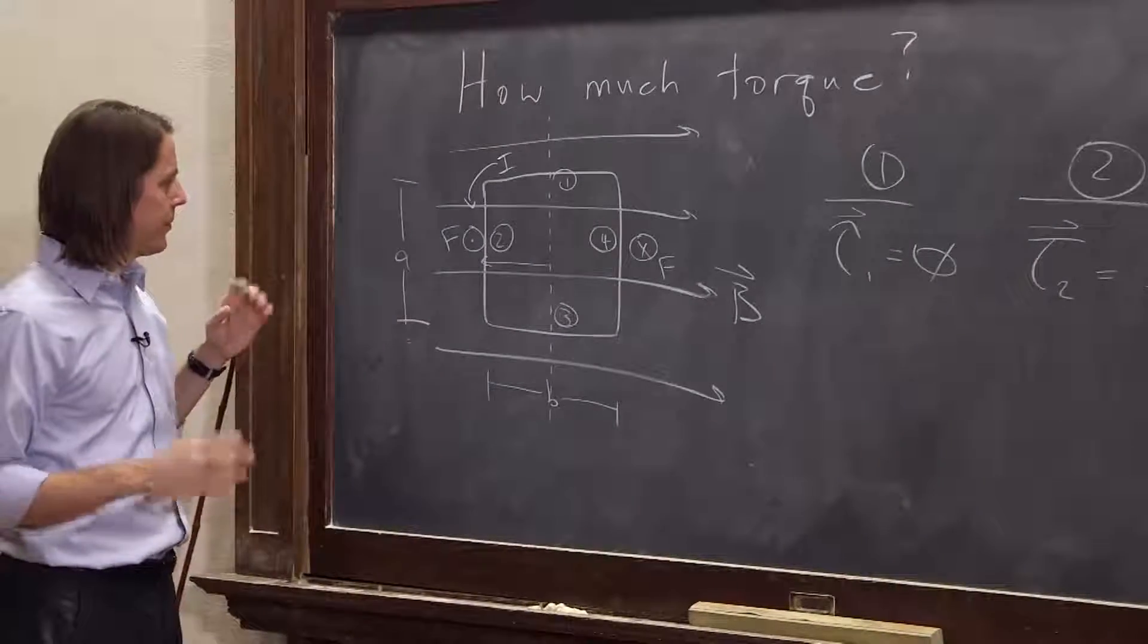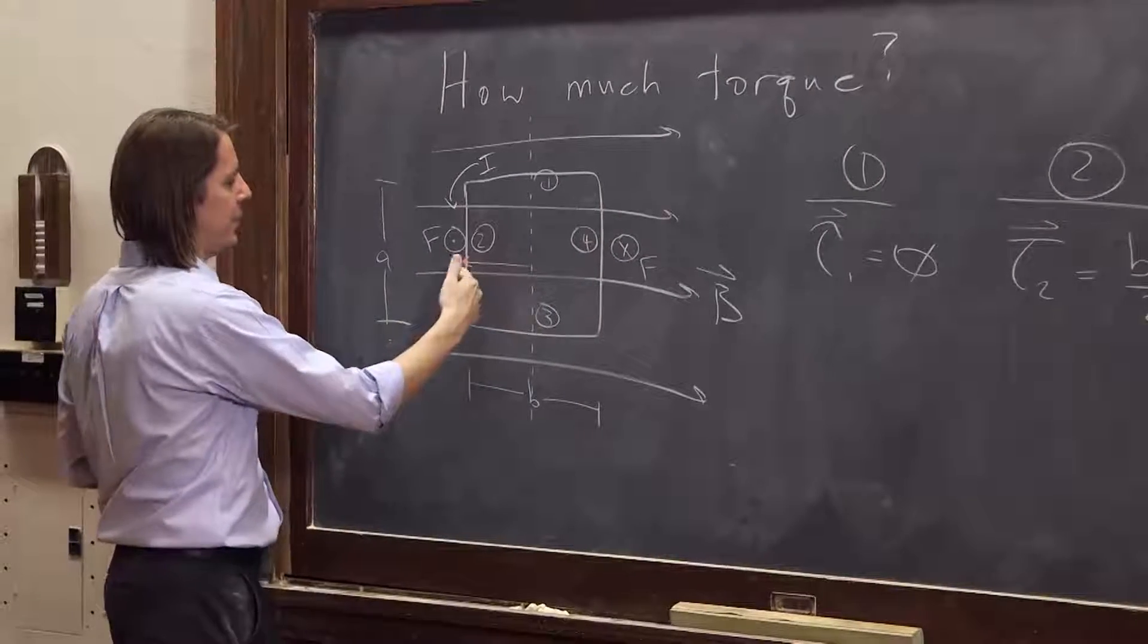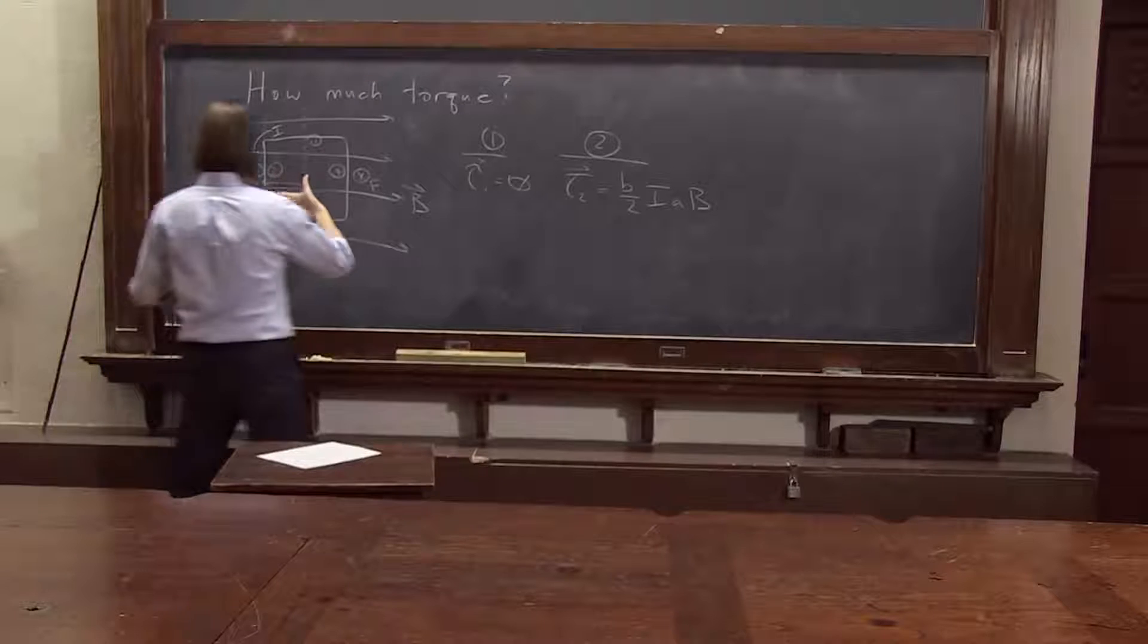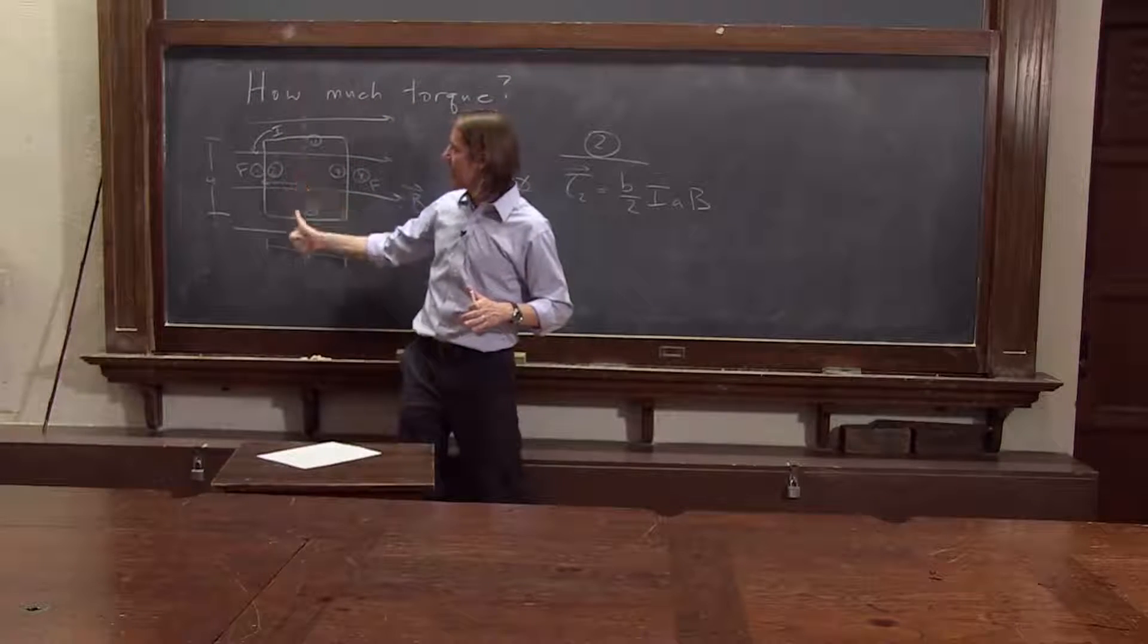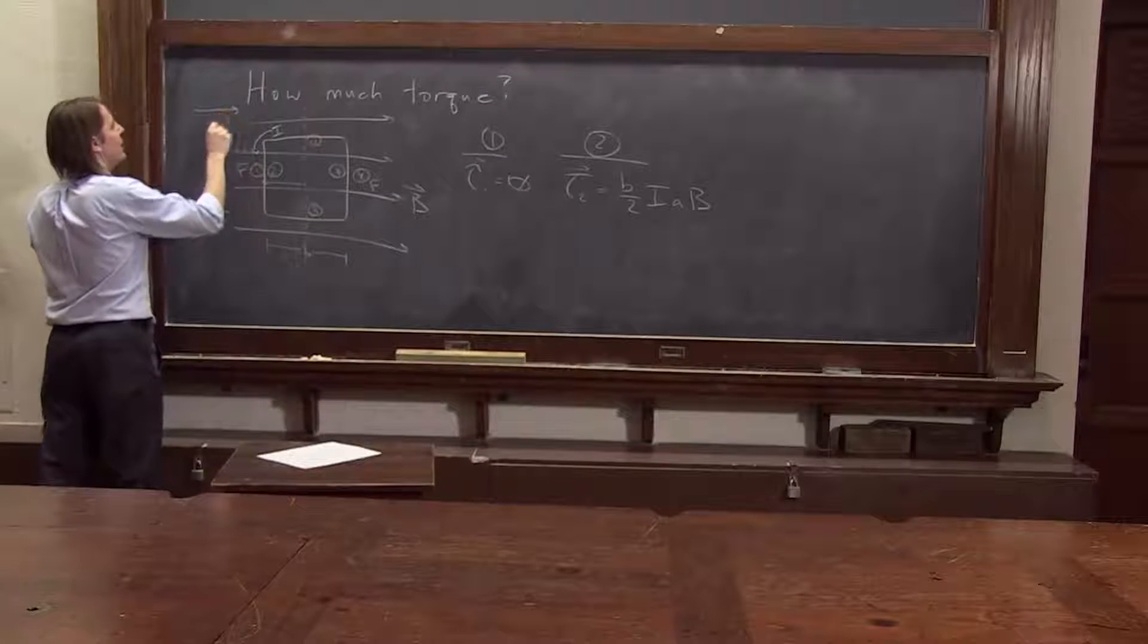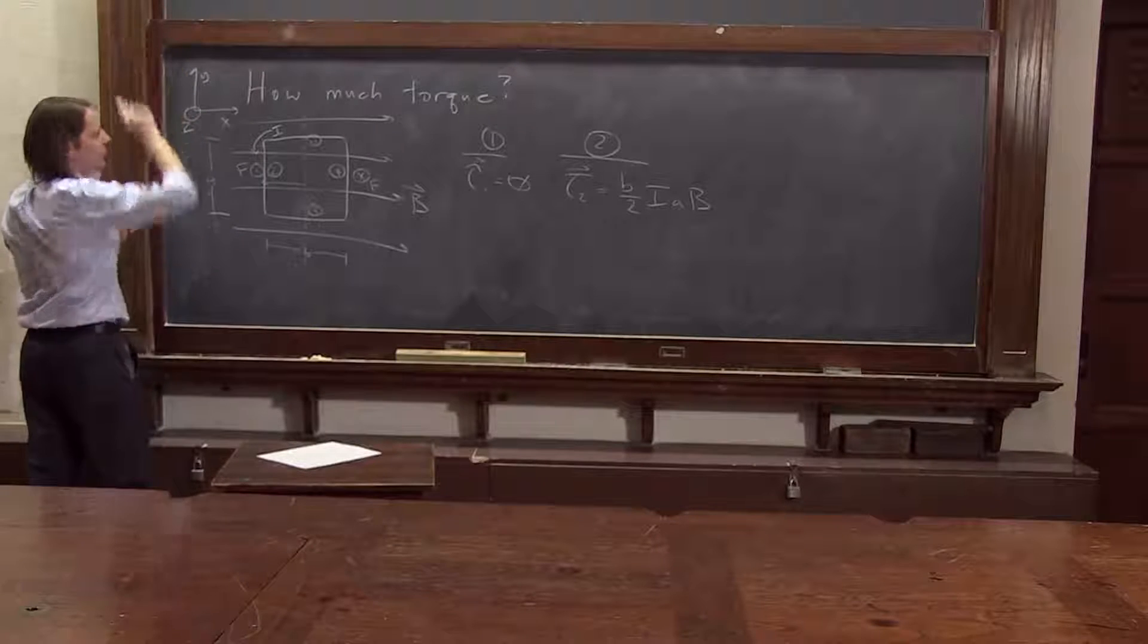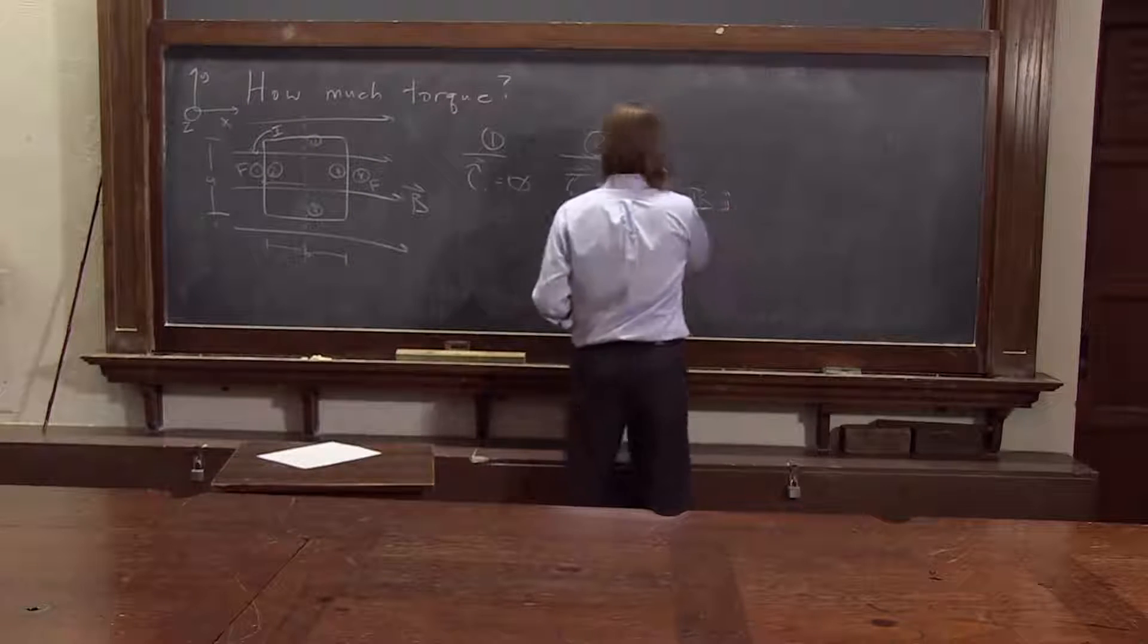And then finally, which way? All right, well, R is going to the left and F is coming out. So I didn't practice it ahead of time. Let's see. R cross F is up. So we also had a coordinate system, as I recall, X, Y, and Z. So it's in the Y direction. That's J hat.